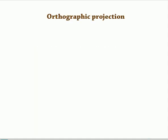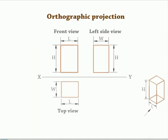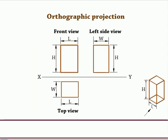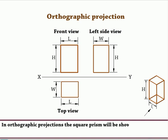Orthographic projection. In orthographic projection, the square prism will be shown by front view, top view, and side view.